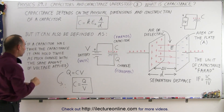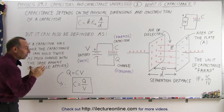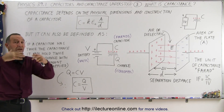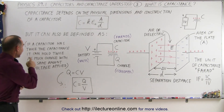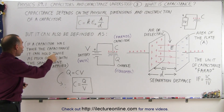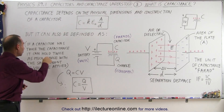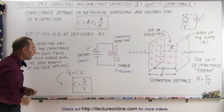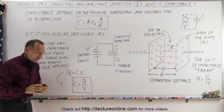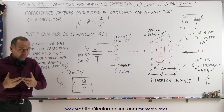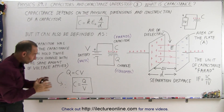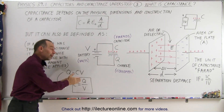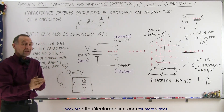If a capacitor has twice the capacitance — maybe twice the area of the plates — then it can hold twice as much charge with the same amount of voltage applied. So the term capacitance means: you apply a certain amount of voltage and you'll collect a certain amount of charge on the capacitor.